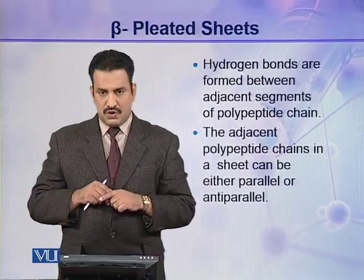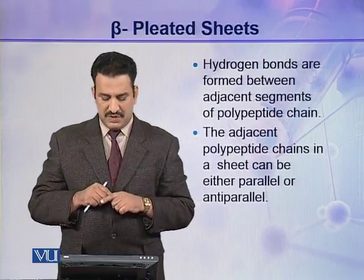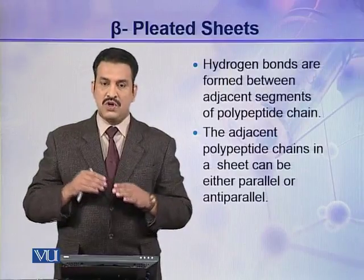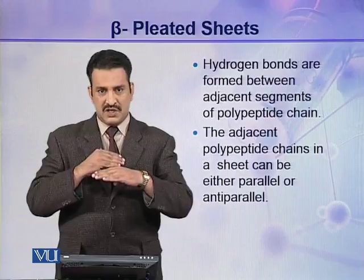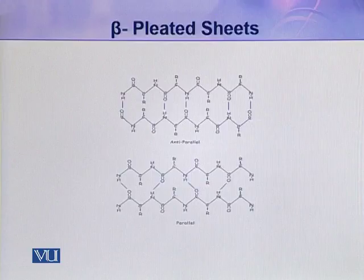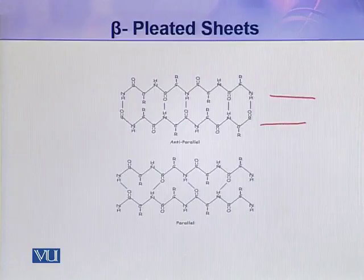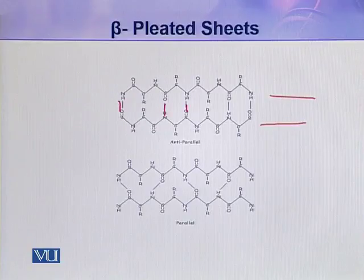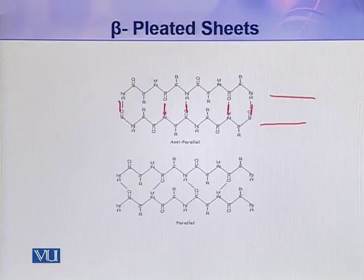The adjacent polypeptide chains in a sheet can be either parallel or anti-parallel. To understand this, let's look at the arrangement of hydrogen bonds. Here you can see two polypeptides arranged in a zigzag manner, and the hydrogen bonds are present between the adjacent polypeptide chains.